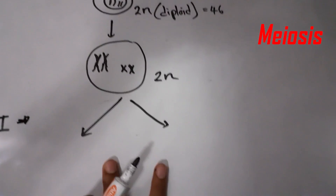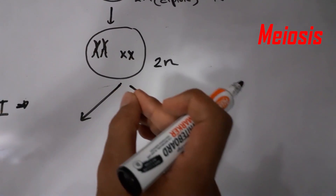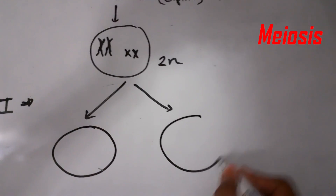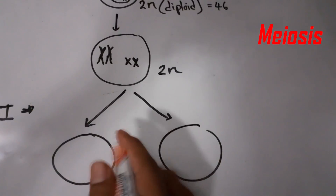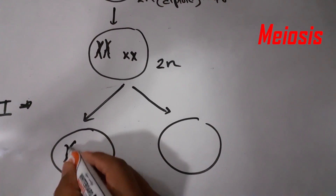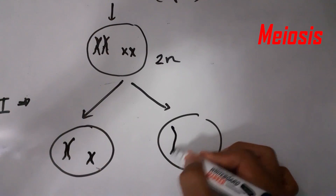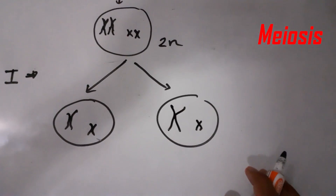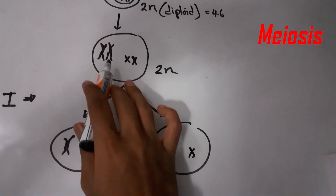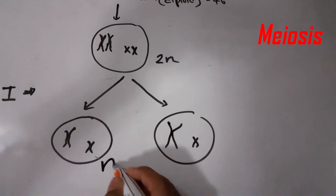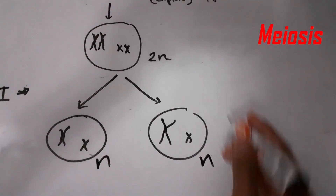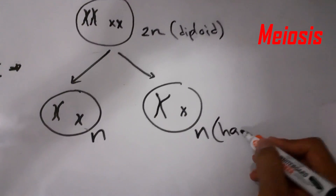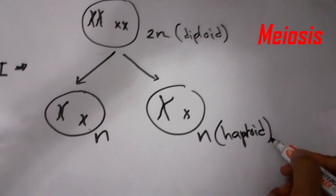In the first division, the homologous chromosome pairs are separated so that each daughter cell receives one long and one short chromosome. There was a 2N number of chromosomes; after the first division, there will be only N number. The diploid number has been reduced to form haploid daughter cells.